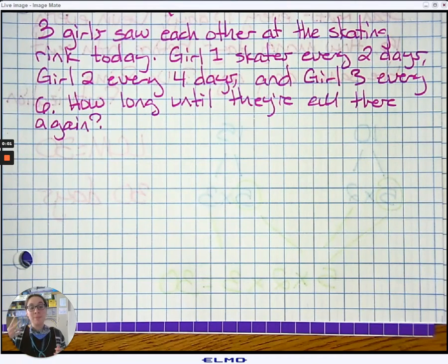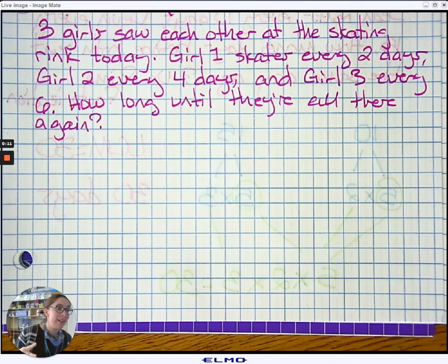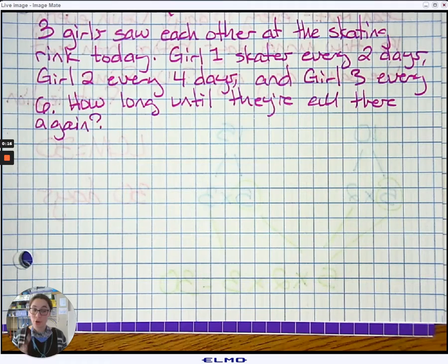This is lesson 3.4 example four of five. We have three girls who saw each other at the skating rink today. The first girl skates every two days, the second girl every four days, and the third girl every six days. How long until they're all there again?